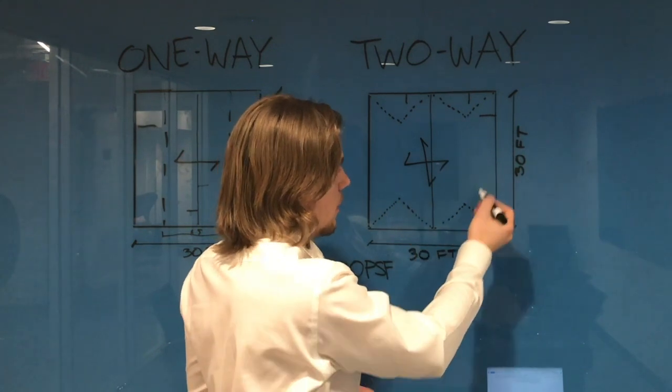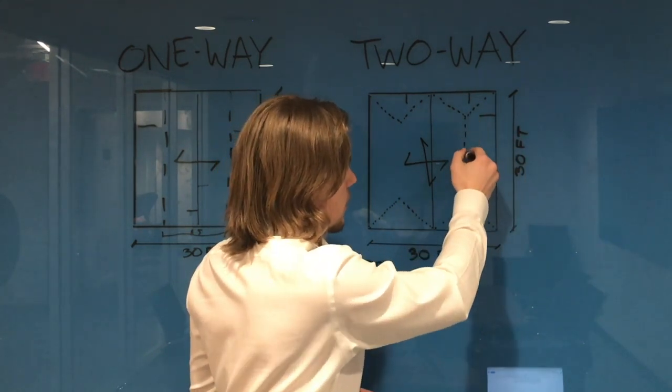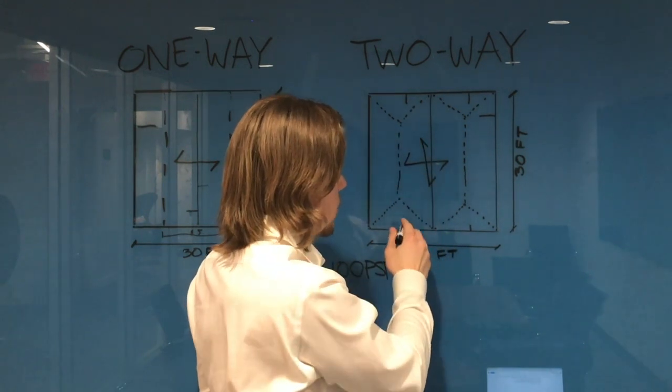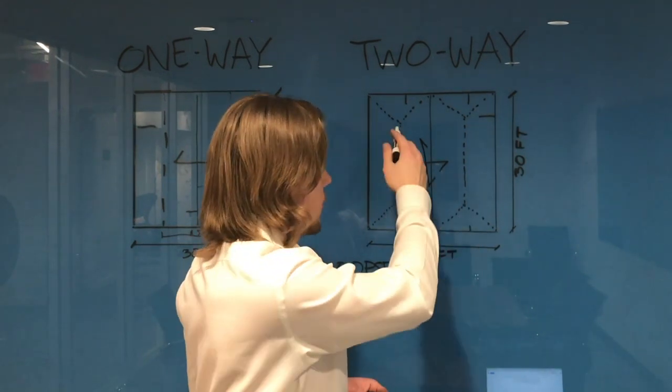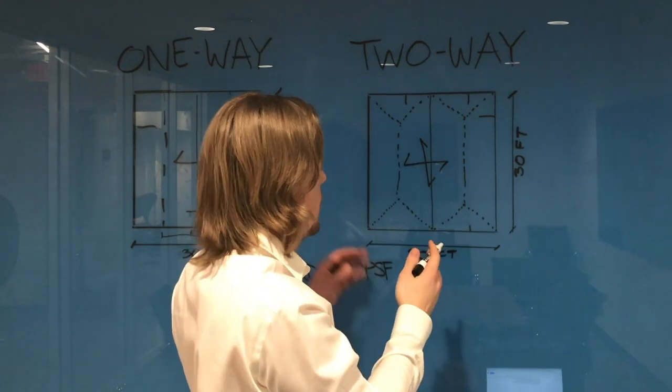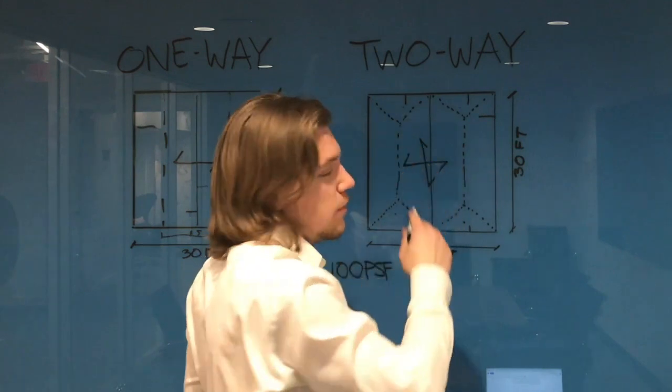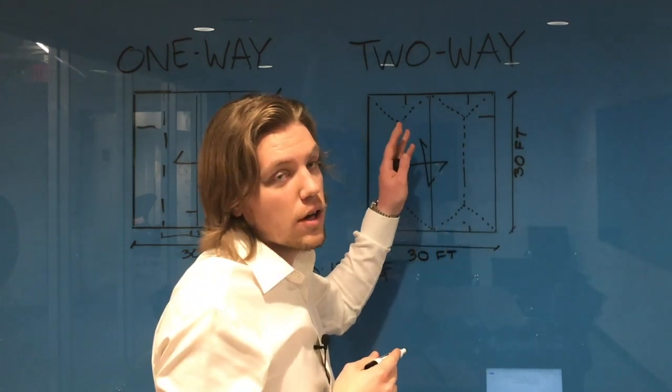And then from here, it's very simple. It's just going to connect this way. So once you get a certain distance away from the girder, it's actually just the same as a one-way area load. So really the only difference is this area here that's going to be applied to the actual girder itself.